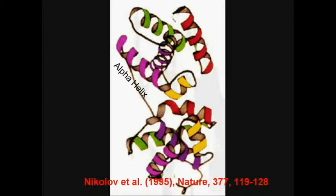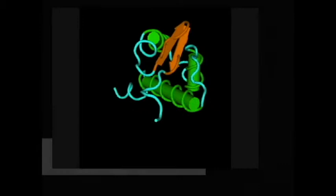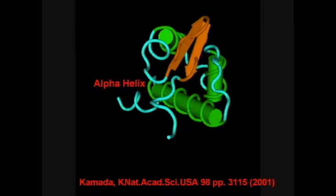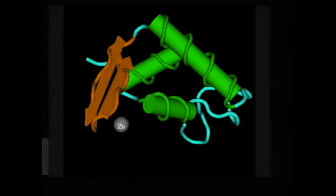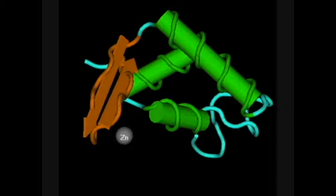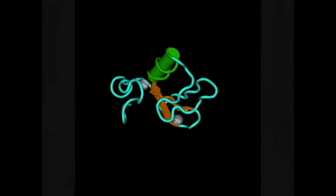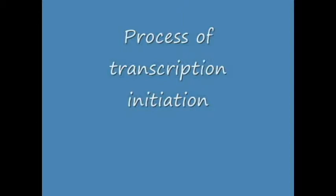TF2B binds downstream to the TATA box and provides a binding surface which is recognized by RNA polymerase II. TF2F involves recruitment of RNA polymerase II. TF2E is an intermediate in the recruitment of TF2H. TF2H has helicase activity.